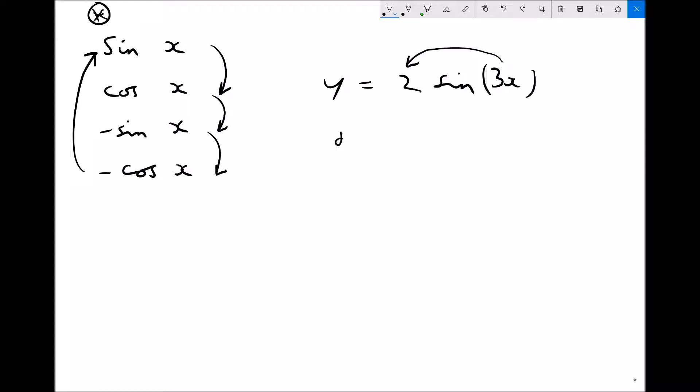So what we would end up with is dy/dx equals, well 3 times 2 is 6. But if we refer to the table in the top left hand corner, a sine function needs to become a cos function. So instead of 6 sine 3x, we're going to end up with 6 cos 3x. The coefficient in the bracket here remains the same.